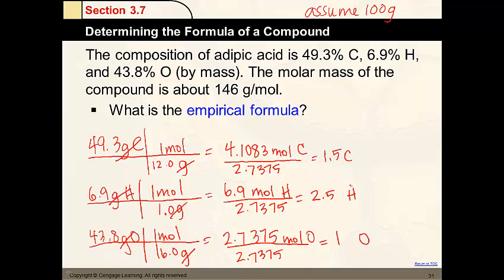Alright. So the last step is to make them all whole numbers. We're going to take each of these times 2. So we're going to end up with 3 carbons, 5 hydrogen, and 2 oxygen. So the formula is C3H5O2.